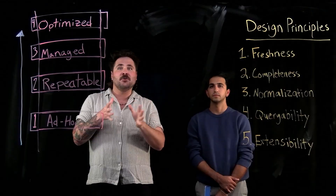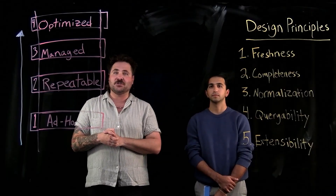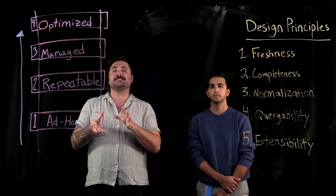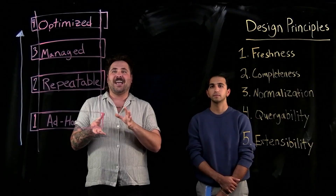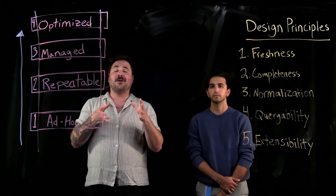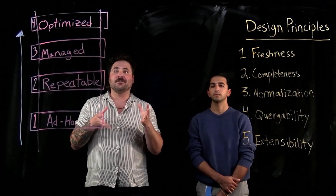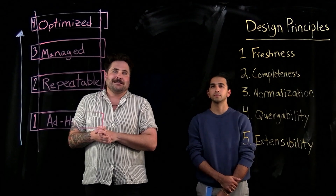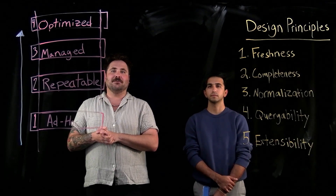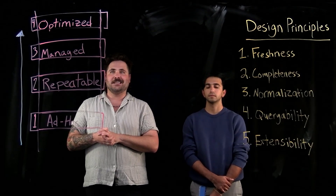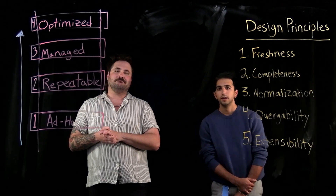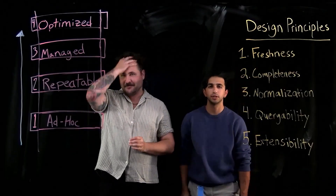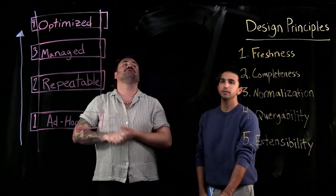I've analyzed hundreds of different inventory implementations and found that every system working well at an enterprise level gets five things right. Let's dig into the considerations you need to make for building out your own cloud asset inventory. We're going to be talking about these five design principles you see on the right-hand side of the screen.